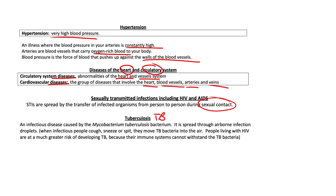TB — tuberculosis. This is an infectious disease caused by the Mycobacterium tuberculosis bacterium. It is spread through airborne infection droplets — just someone coughing near you. When infectious people cough, sneeze, or spit, they move TB bacteria into the air. People living with HIV are at much greater risk of developing TB because their immune system is already compromised, so they can't withstand the TB bacteria.